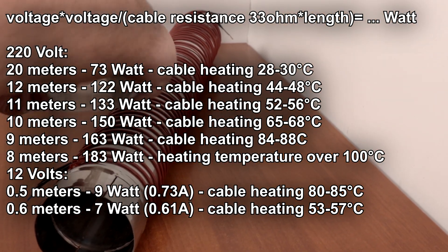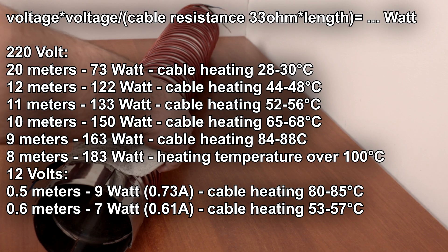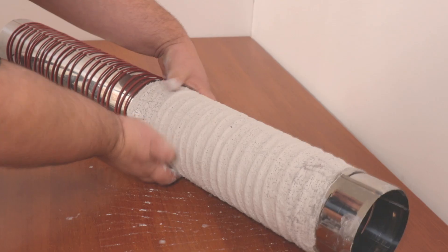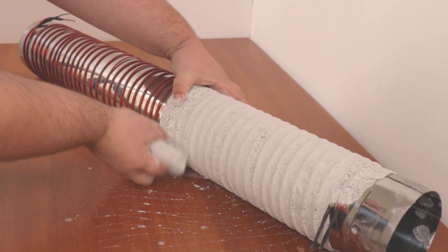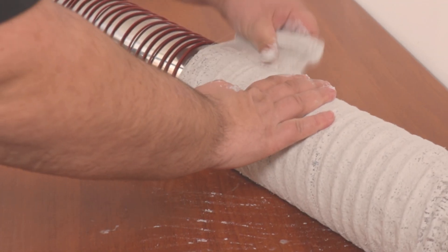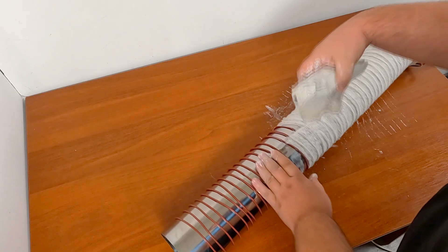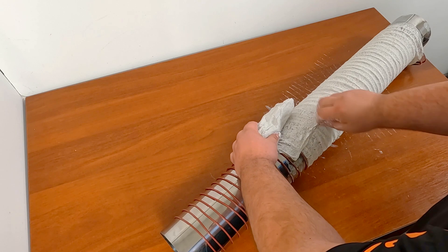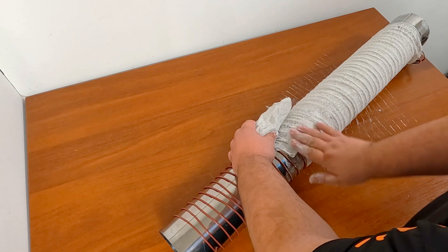I wanted to cover the cable with plaster for better heat transfer and distribution, but I couldn't find it at the nearest store. The good thing is that I bought a plaster bandage at the local drugstore, which is used to fix broken limbs. I decided to use it, it was even more convenient. I just wet it, wrap it in two layers and that's it.